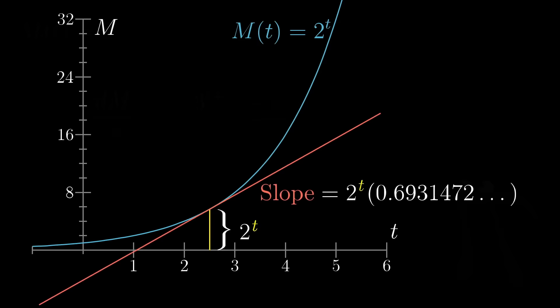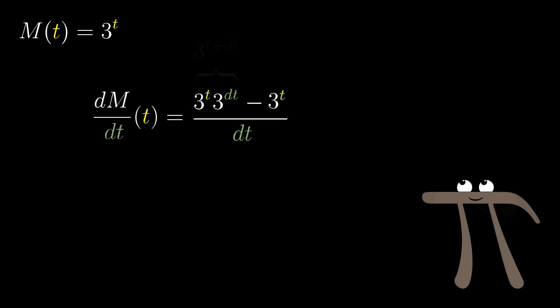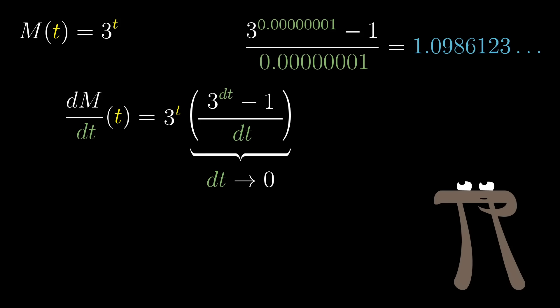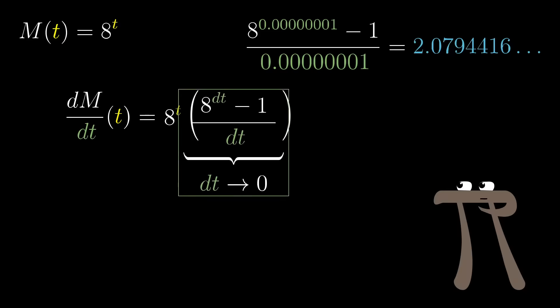And there's not too much special about the number 2 here. If instead we had dealt with the function 3 to the t, the exponential property would also have led us to the conclusion that the derivative of 3 to the t is proportional to itself, but this time it would have had a proportionality constant 1.0986. And for other bases to your exponent, you can have fun trying to see what the various proportionality constants are, maybe seeing if you can find a pattern in them. For example, if you plug in 8 to the power of a very tiny number, minus 1, and divide by that same tiny number, what you'd find is that the relevant proportionality constant is around 2.079.